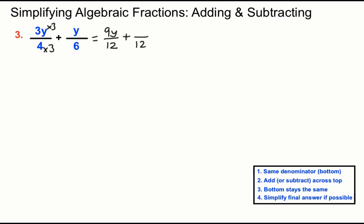And on the second fraction we will have had to multiply the bottom 6 by 2. Better do the same to the top creating 2y on the top of that fraction. We'll add across the top, 9y plus 2y is 11y. And we'll keep the bottoms the same. 11y over 12 is a simple fraction, so we can't simplify that any further.